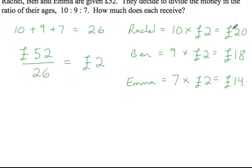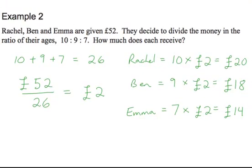And again, if we add this up, 20 plus 18 plus 14, that gives us 52. And 52 is what we had to divide up according to this ratio between these three people.